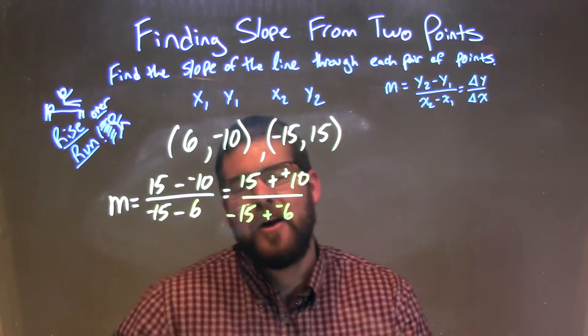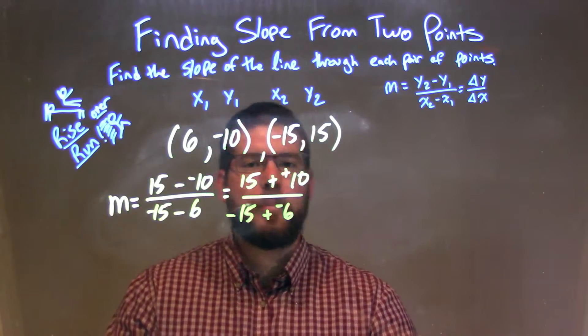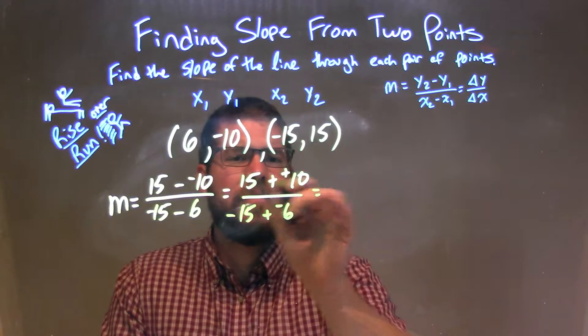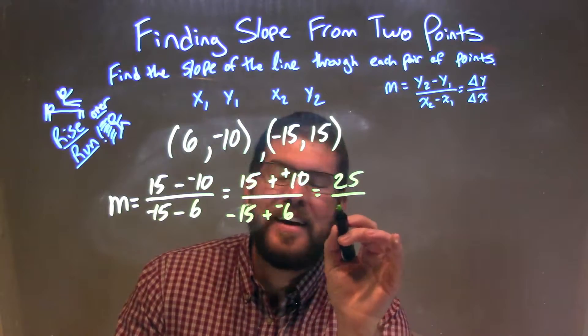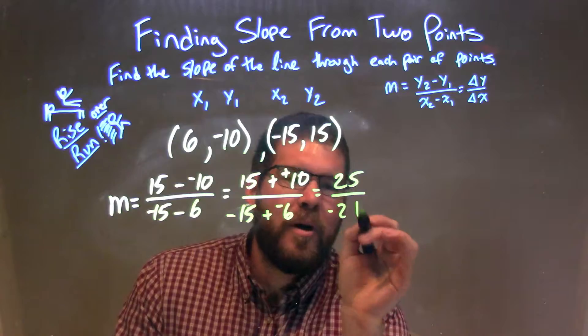So, pretty easy now. 15 plus 10 is 25, you got this. And negative 15 plus a negative 6, that's just a negative 21.